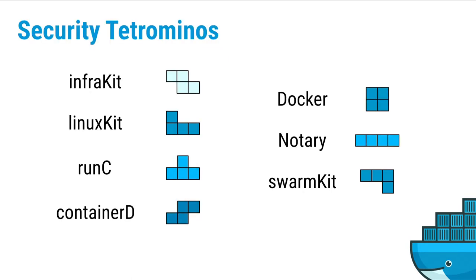We've got a whole bunch of pieces that make up our tetrominoes. We're going to start with InfraKit, RunC, ContainerD — we'll go into detail on some of these in a minute — Docker, Notary, SwarmKit, and the latest addition, LinuxKit.